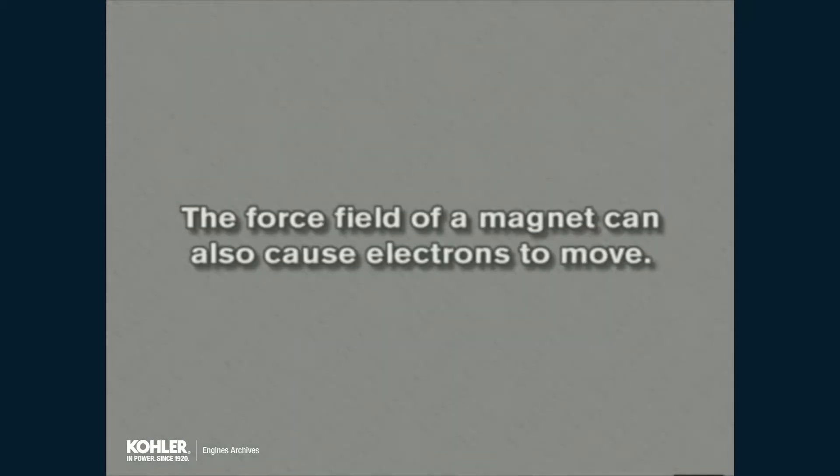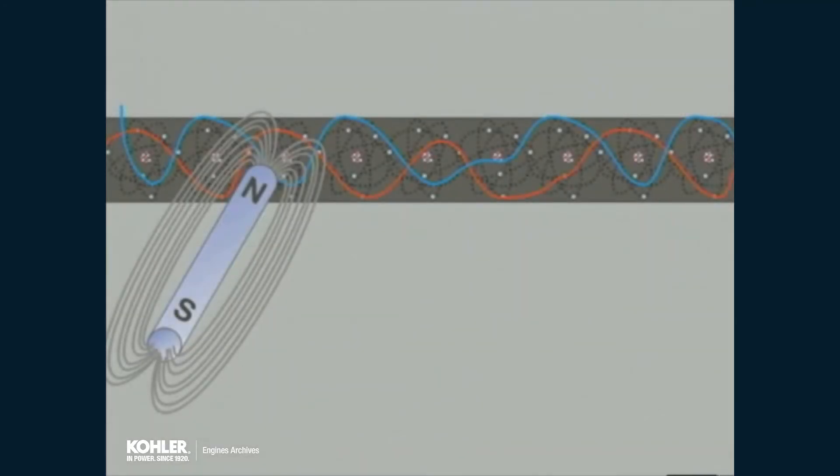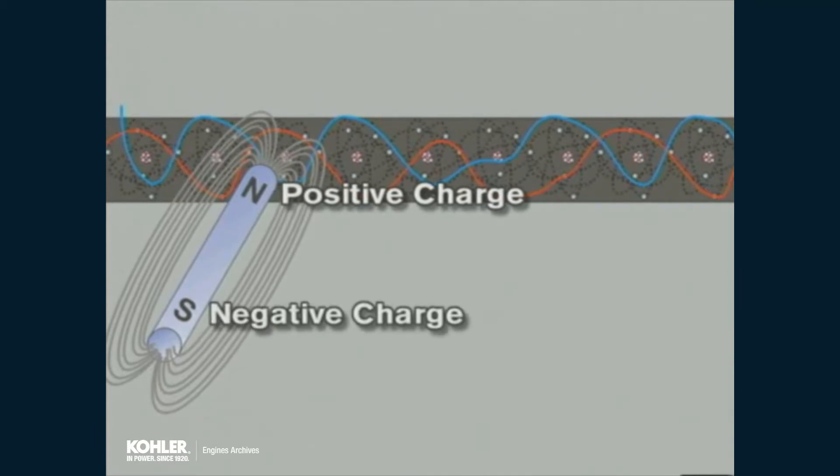The force field of a magnet can also cause electrons to move. A magnet is surrounded by a force field called flux. The north pole has a positive charge and will attract electrons. The south pole is negative and will repel electrons.